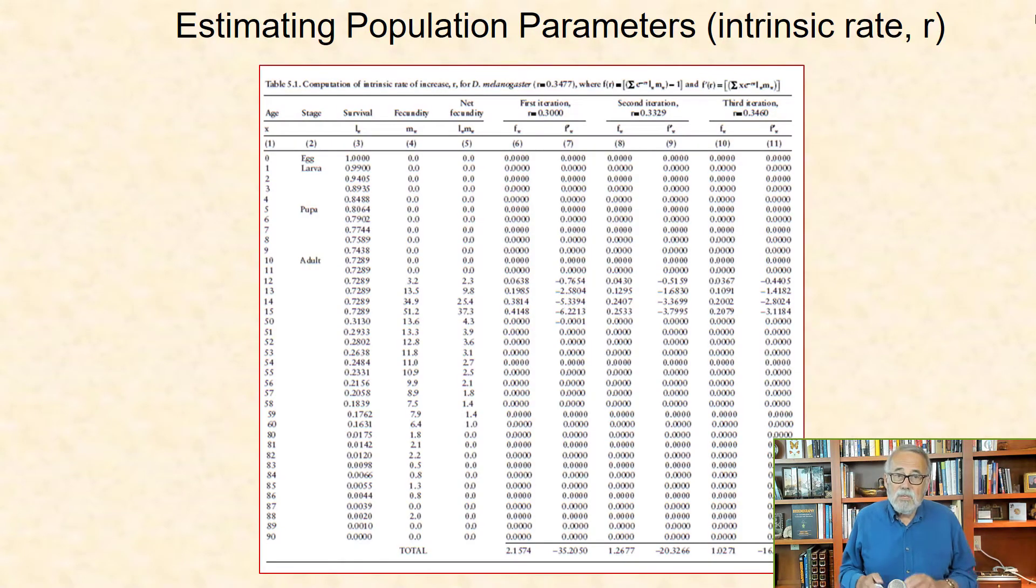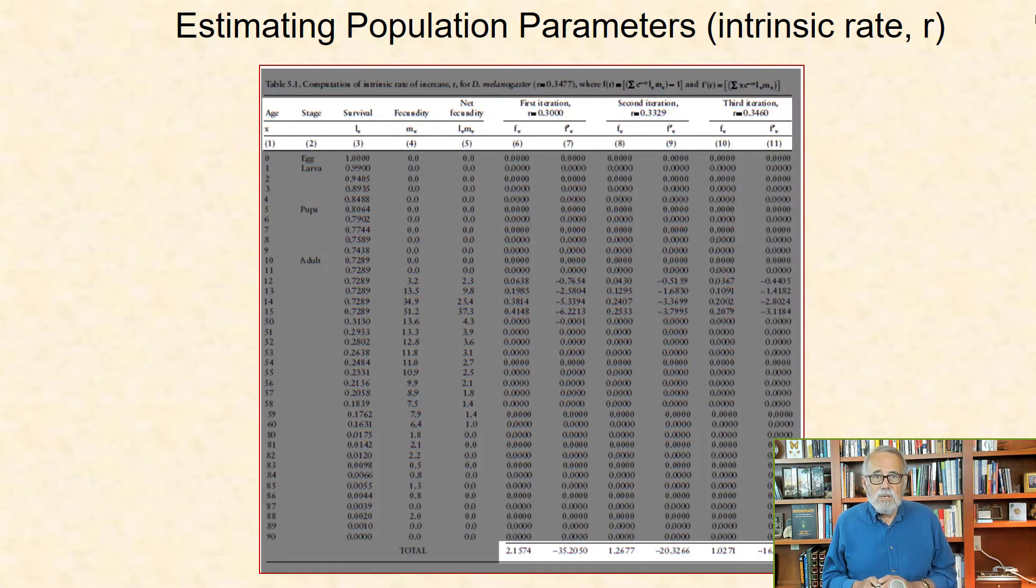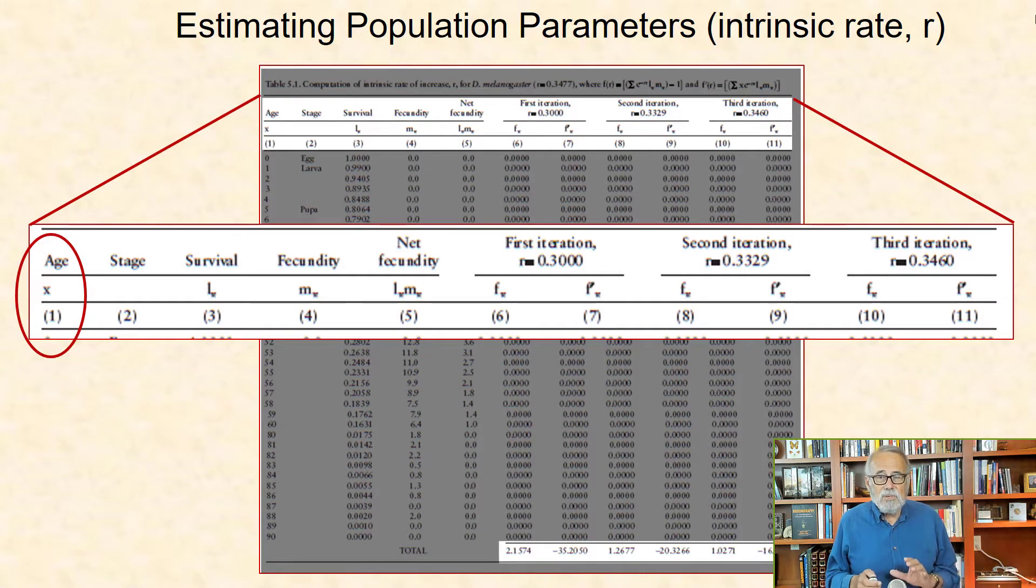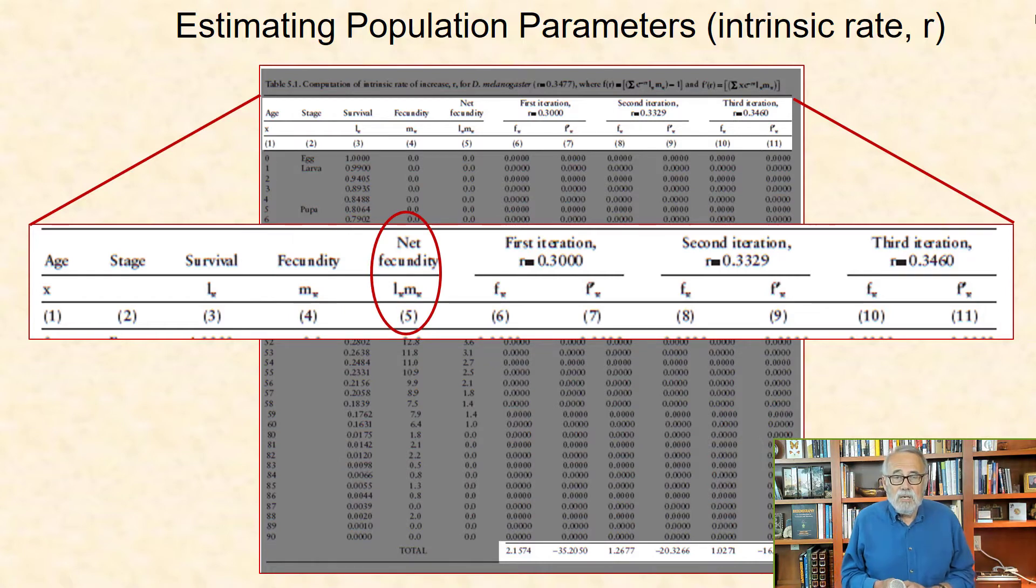Before I get into the steps for computing the exact value of the intrinsic rate of increase, I need to describe the contents of this table, which contains example survival and fecundity data for Drosophila, as well as information on the iterations needed for arriving at the exact value of r. The table contains 11 columns. Column 1 contains age in days from 0 to 90. Column 2 is stage, with egg, larvae, pupae, and adult stages, corresponding to chronological ages. Column 3 is the cohort survival LX. Column 4 contains data for the fecundity, MX. And column 5 contains net fecundity, which is the product of survival LX and fecundity MX. These are the data for which I will show how to compute the value of r in three iterations.